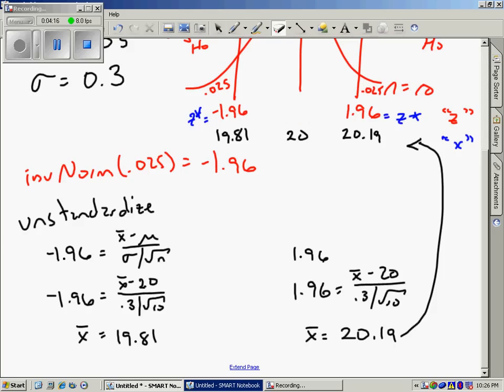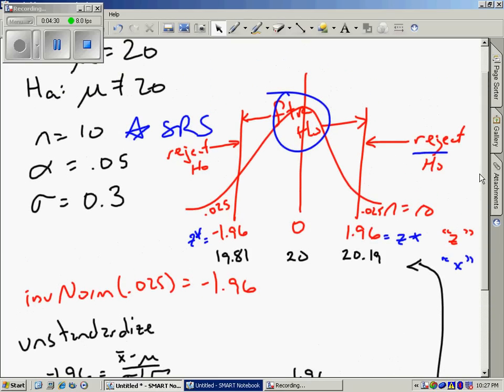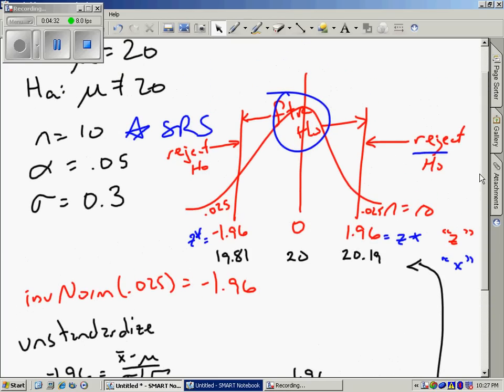To sum up, if the inspector samples 10 bottles and gets an X bar less than 19.81 or greater than 20.19 ounces, he knows he should reject H0. He should decide the true mean is not 20 anymore, but the machine is out of whack and needs to be recalibrated.